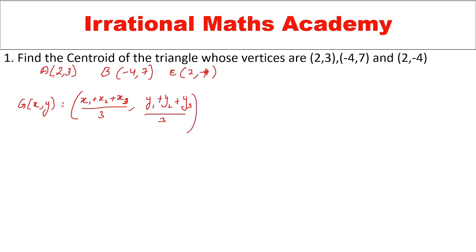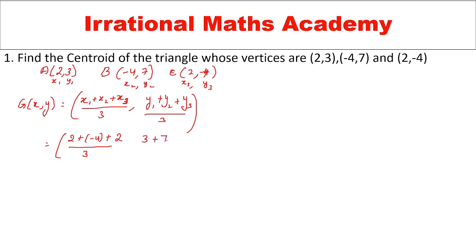Now we will substitute in the formula. Let us take these as x1, y1, x2, y2, x3, y3. So x1 = 2, x2 = -4, x3 = 2, divided by 3. And y1 = 3, y2 = 7, y3 = -4, divided by 3.